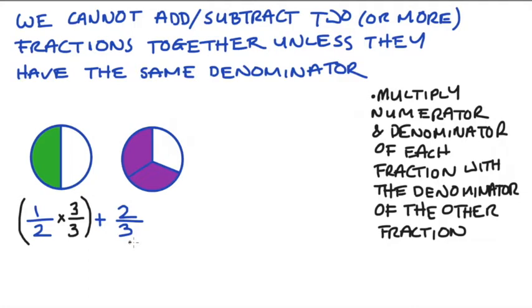For the fraction 2 over 3, I'm going to multiply it by 2 over 2, since 2 is the denominator of the first fraction.